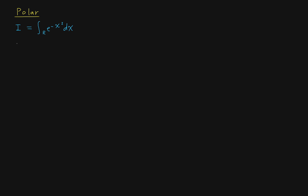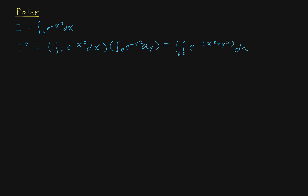We're going to start with polar first. So we're going to want to consider the square of the integral — the integral on ℝ of e to the negative x squared dx. We're going to treat this like a double integral when we multiply it out. The variable is just a variable, so we can change this to y: e to the minus y squared dy. So this is going to be a double integral of e to the minus x squared plus y squared dx dy.